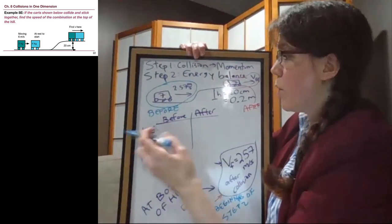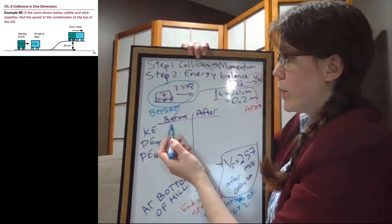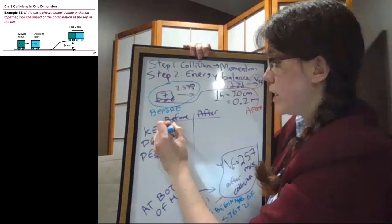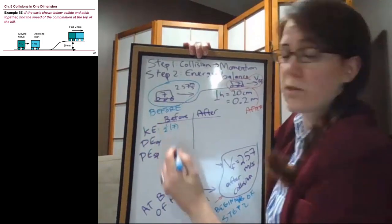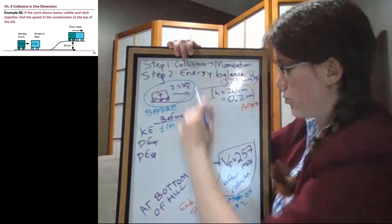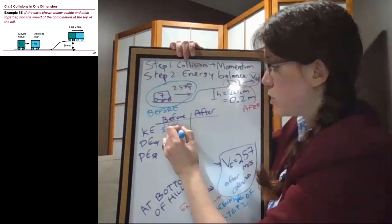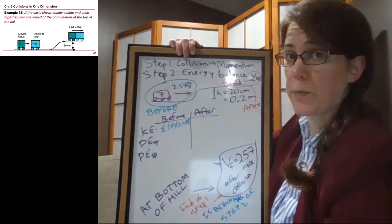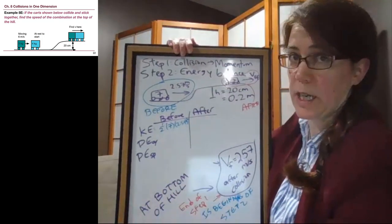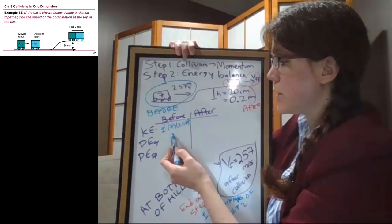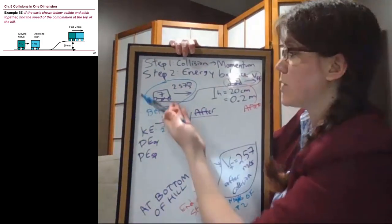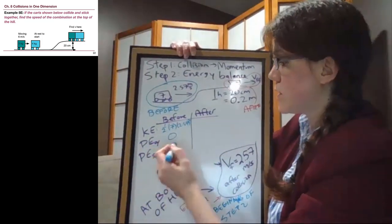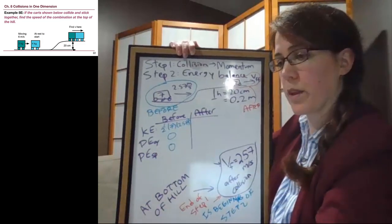Okay. So at the start of the problem, we ask ourselves, are we moving? We look and the answer is yes, we are moving. We're moving with that 7 kilograms. For this time, I'm going to write in the numbers so that I don't run out of space. And that speed that we're moving at is 2.57, and that value is squared. That is the amount of kinetic energy that we have. For the potential energy of gravity term, we ask ourselves, are we higher? At the start of the problem, we're at the bottom of the hill. So that answer is no. And then we ask ourselves, is there a spring? No spring.